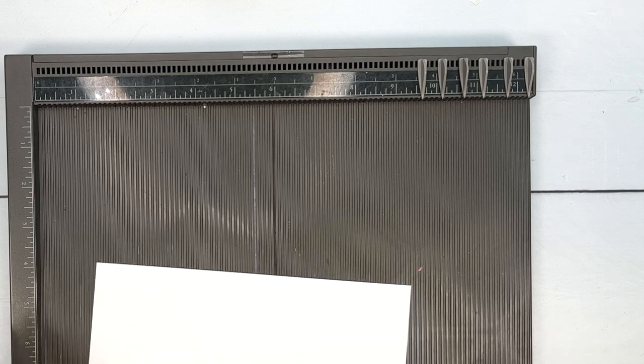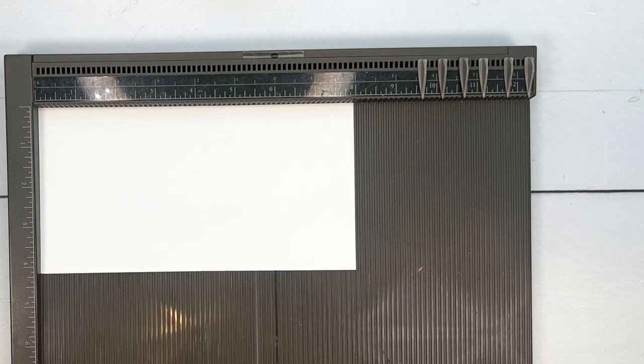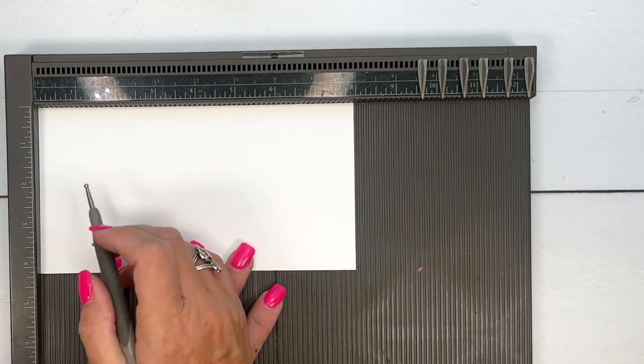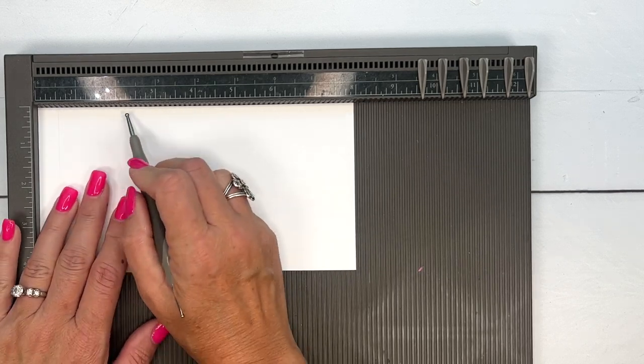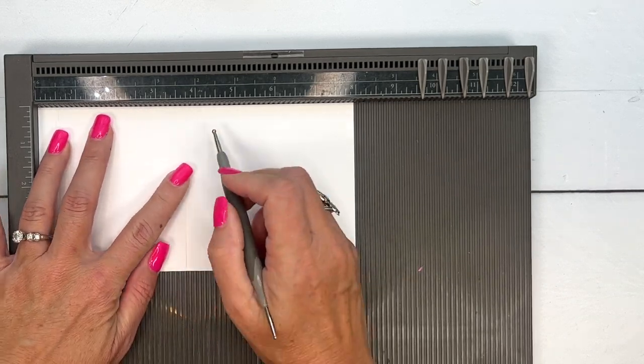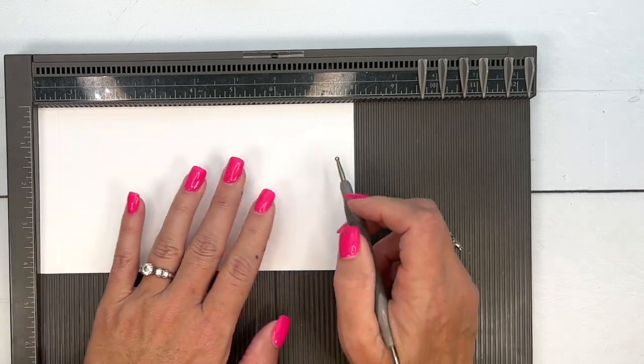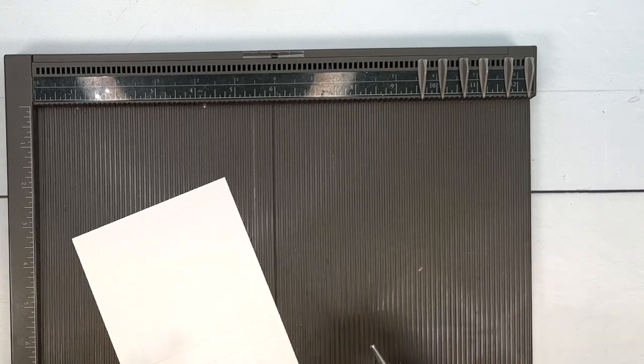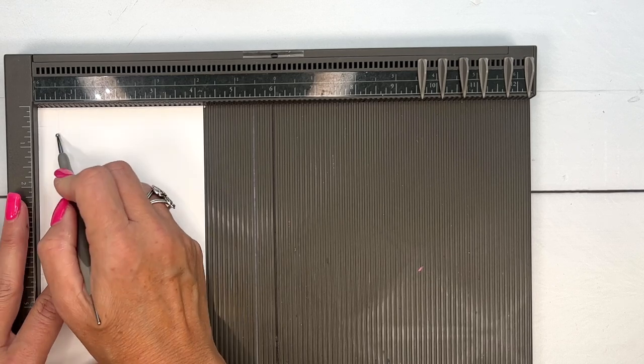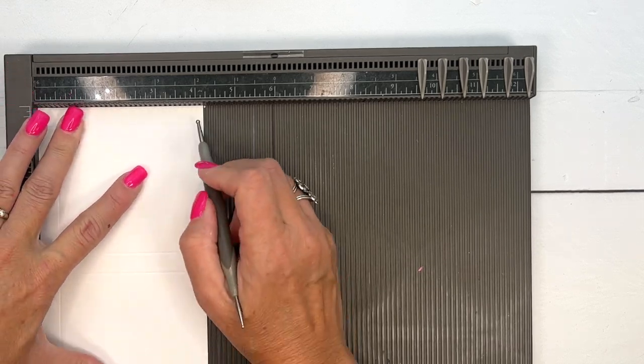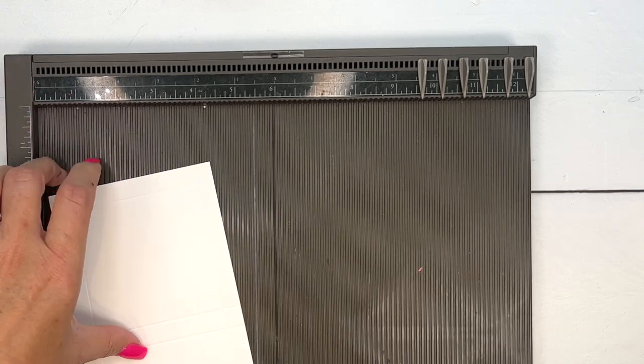All right, you're going to need a piece of thick basic white that is four and a fourth by eight. On the long side you're going to score it at half an inch, three and three-fourths, four and a fourth, and then seven and a half. Now turn it to the short side and score it at half an inch and three and three-fourths of an inch.